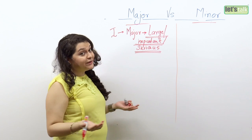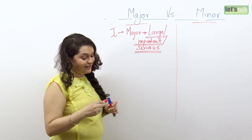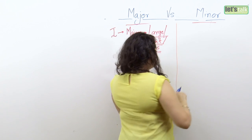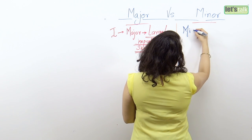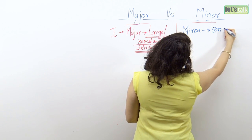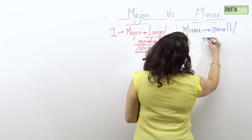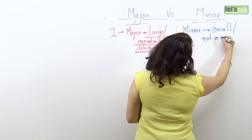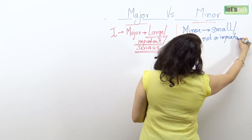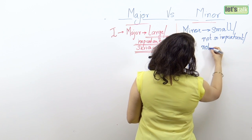So what then has minor got to do with things? Well, minor happens to be equally versatile. The word minor can mean small, not so important, or not so serious.